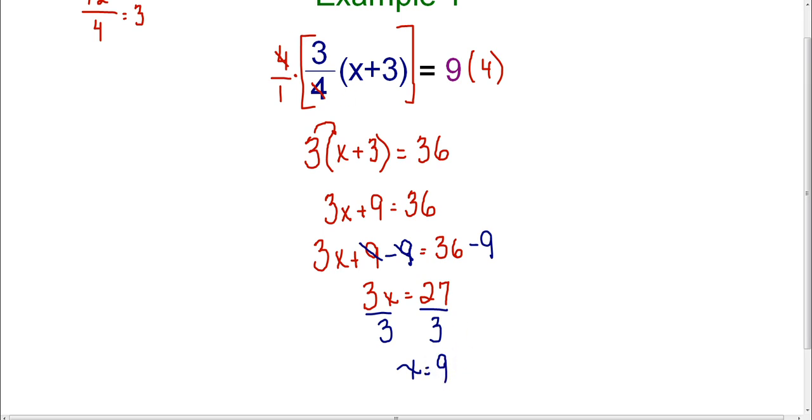If you want to check, it's always a great idea to go back and check your answer. You just go back into the original problem and substitute 9 for x. I have 3/4 times, I'm going to put 9 in for x, so 9 plus 3, this should end up equaling 9. This is 3/4 times 12, equals 9, and I know that 3 times 12 is 36, and 36 divided by 4 equals 9. It works.